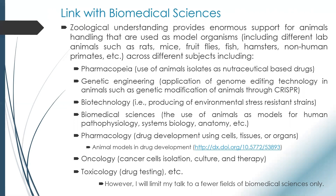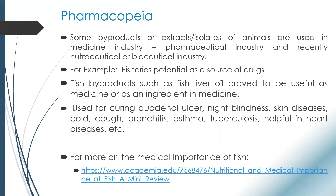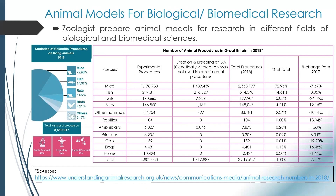Similarly in oncology and toxicology, and in pharmacopoeia as I mentioned, some byproducts are used as medicine and some are used as ingredients in medicines. For example, fish liver oil is used for treating juvenile ulcers, night blindness, and skin diseases, and it is considered useful in cardiovascular diseases. There is a link here to an article detailing the nutritional and medical importance of fish. This table depicts the number of animal procedures carried out in Great Britain in 2018, and this figure provides the statistics of scientific procedures on living organisms in 2018.